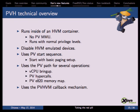PVH runs inside an HVM container and doesn't require the PV MMU code, which is very intrusive — Linux kernel maintainers always complain about PV MMU because it is very intrusive. It also allows the kernel to run with normal privilege levels because we are using virtualization extensions on the CPU, so everything related to the CPU and MMU is virtualized by hardware. All emulated devices — those emulated by QEMU or by Xen like the local APIC or IO APIC — are disabled, so the guest has to use the PV path.